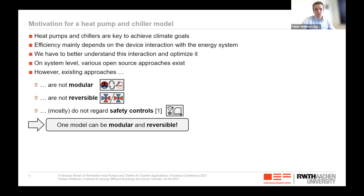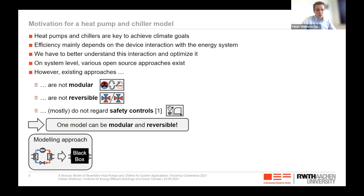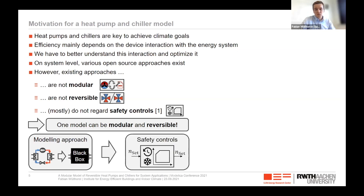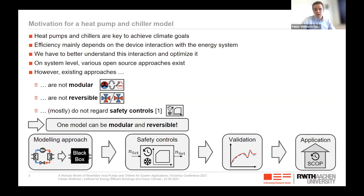Now that I've answered how one model can be modular and reversible, I want to explain the modeling approach behind our model. We implemented the vapor compression cycle as a black box approach to ensure a modular model, because the vapor compression cycle itself depends on the device configuration. I will highlight the black box approach, then explain the implementation of safety controls, go into validation of two different black box approaches, and lastly display the application in a coupled building energy simulation.